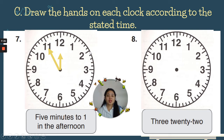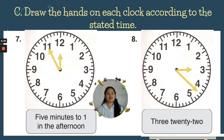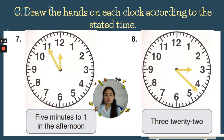Number eight: 3:22. Three is the hour, so the short hand points at three. Twenty-two is the minutes — five, ten, fifteen, twenty, twenty-one, twenty-two. So that is the long hand. Very easy — good job!